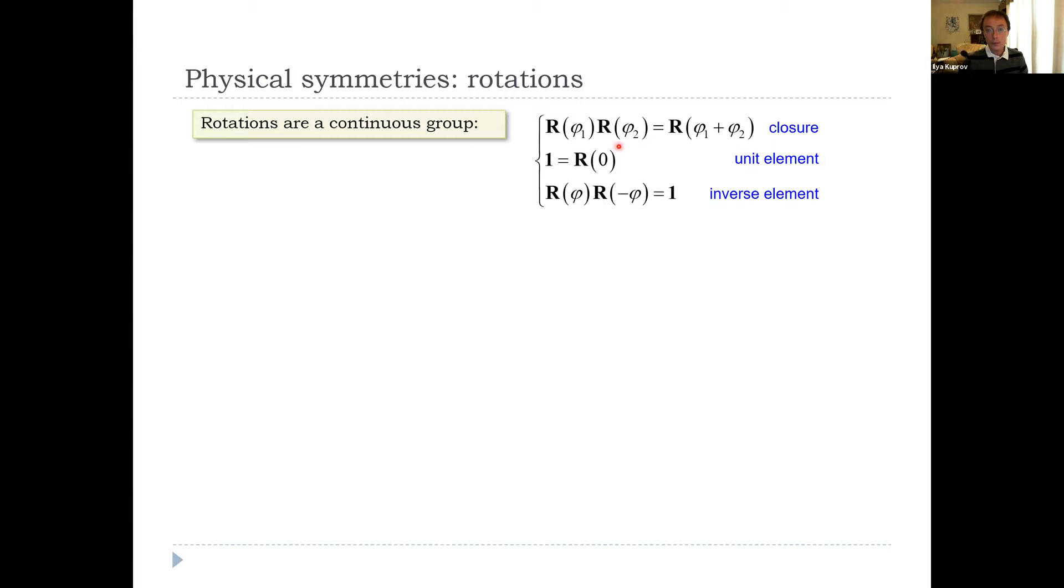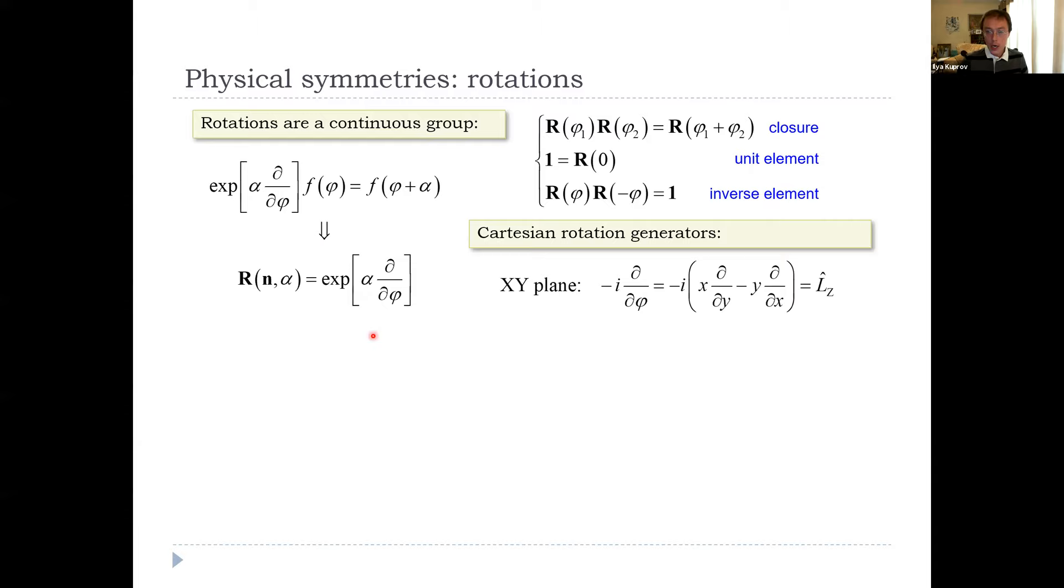Again, rotations are a continuous group. One rotation times another is another rotation—this is called closure. There's a unit element that does nothing. For every rotation, there is an inverse one. It's the same game. The exponential of derivative is an increment. So exp d by d phi is just shifting f. That must be the rotation operator. If we go through the chain rule and express it in Cartesian coordinates, you will see the operators that we know from classical physics are angular momentum operators. So it turns out angular momentum operators are generators of the rotation group. You have the usual commutation relations for them.